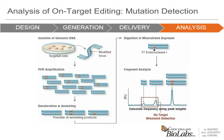The PCR reaction is subjected to denaturation and re-annealing, which will result in three possible products: the homoduplex wild type, the homoduplex mutant, and the heteroduplex. This pool of duplexes is then subjected to T7 endonuclease 1, which will digest only those that are heteroduplexes. The resulting digest is either run on a gel or on a fragment analyzer. These smaller fragments represent on-target edits. By following a simple calculation provided on our website, one can estimate the efficiency of the editing experiment and determine what percentage of the cells were modified.